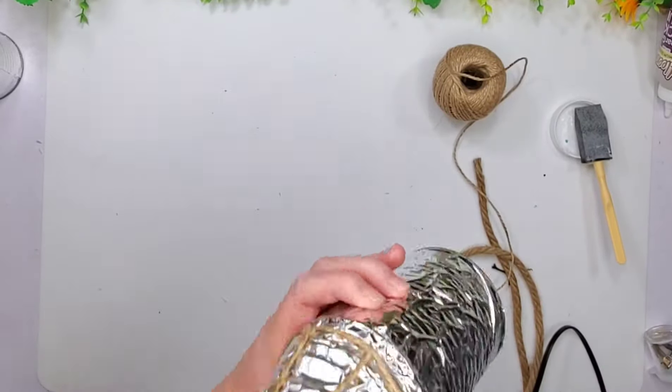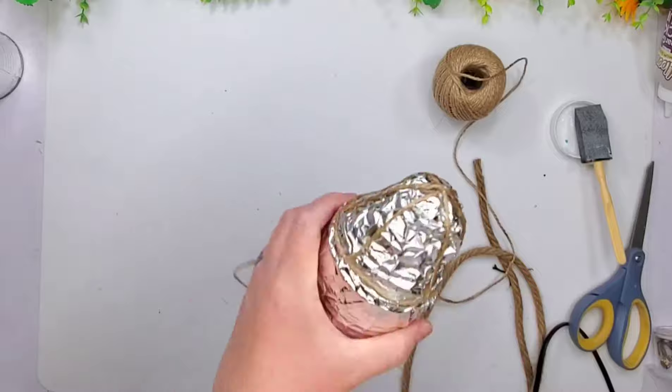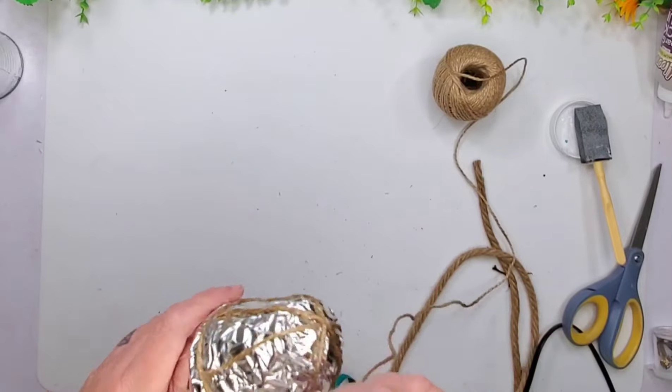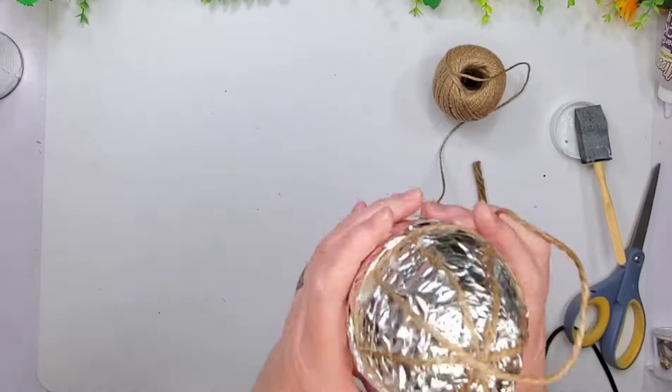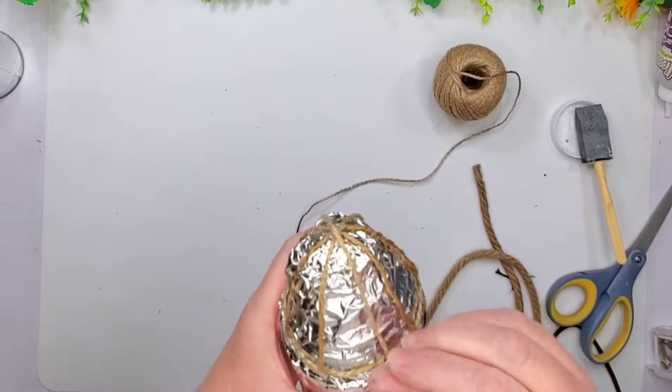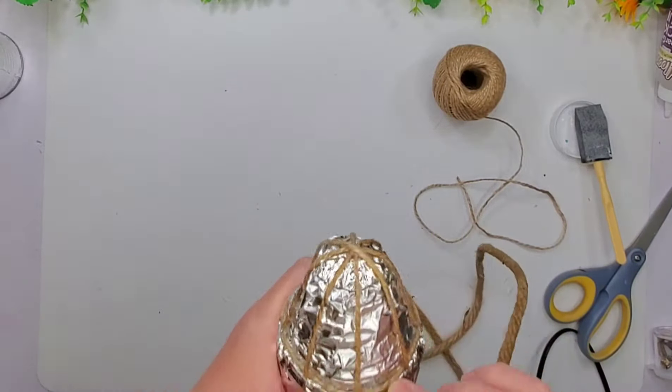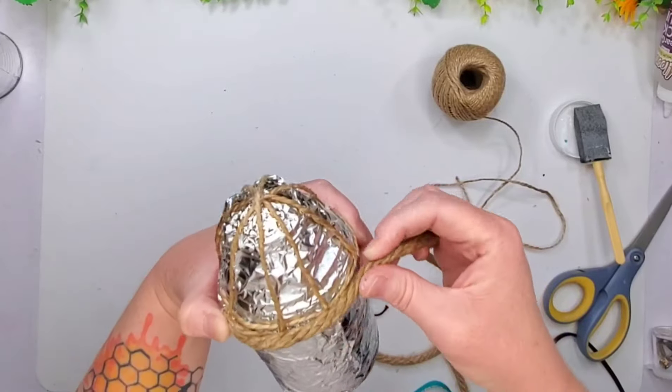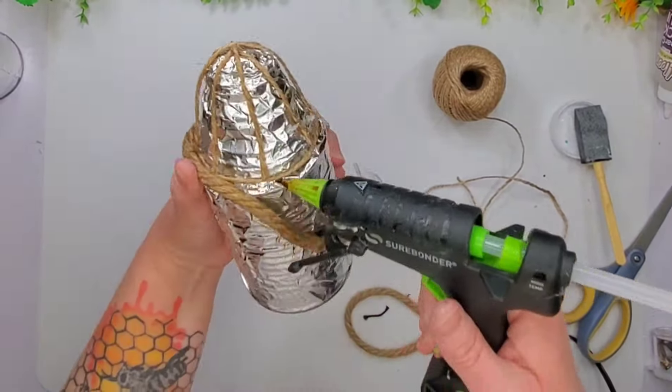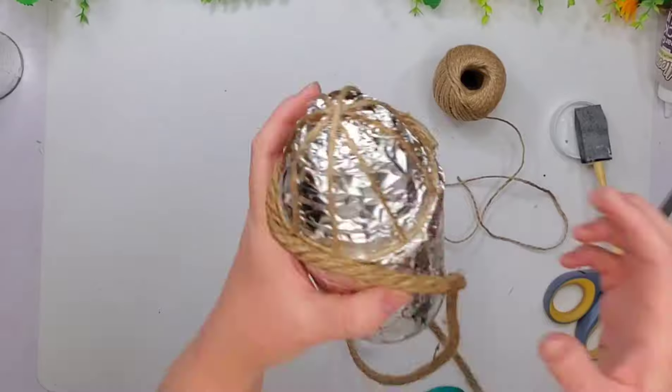And then I'm going to take and do like a crossover the top. So I do one side, glue it down, and then I'll go ahead and do the other side. And I put a little glue on the top and then tack it down to the other side.